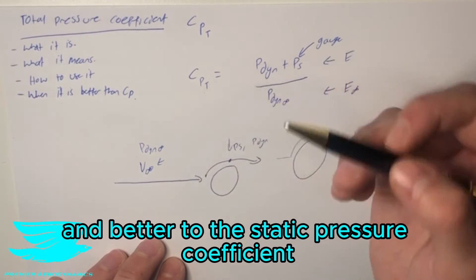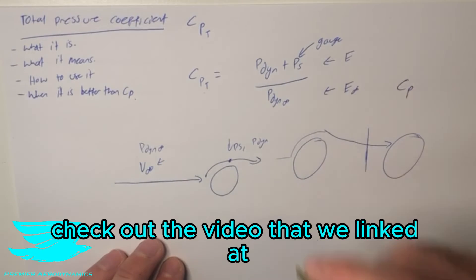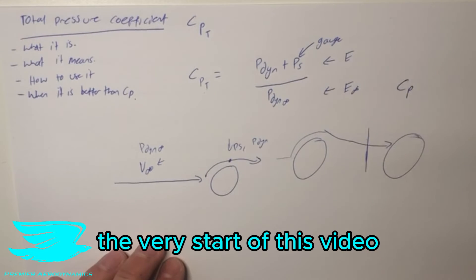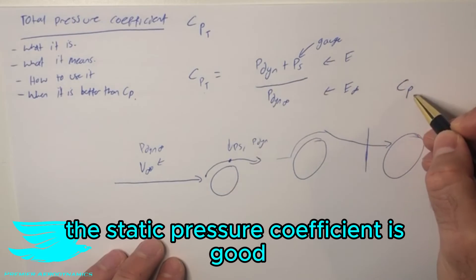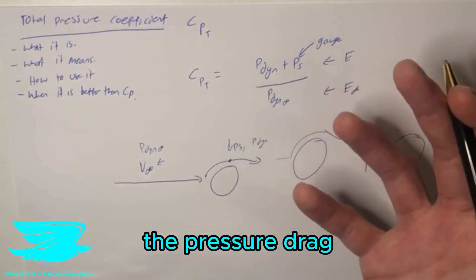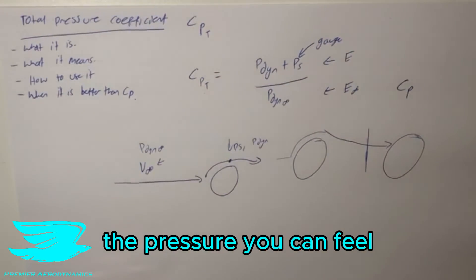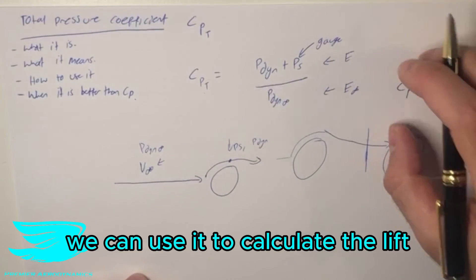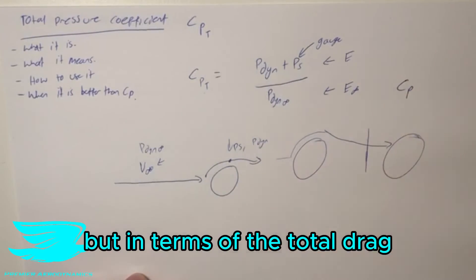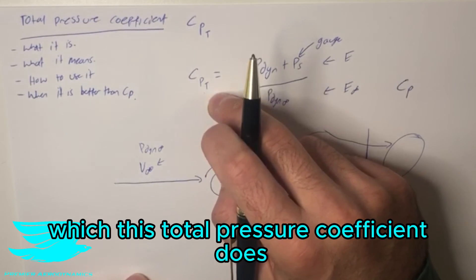And this is where this is different and better than the static pressure coefficient, which if you haven't seen this video, check out the video that we linked in the very start of this video. The static pressure coefficient is good in terms of it will give us a general idea as to the pressure drag based on the pressures in the field because it's static pressure, the pressure you can feel. But in terms of the lift, we can use it to calculate the lift. But in terms of the total drag, it doesn't really tell us much about the viscosity effects, which this total pressure coefficient does.